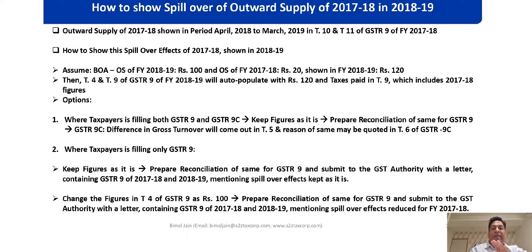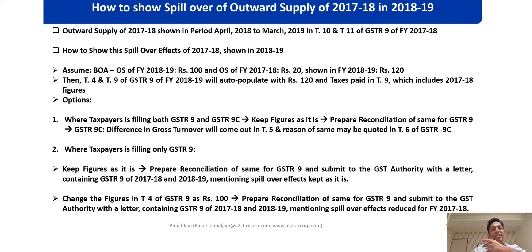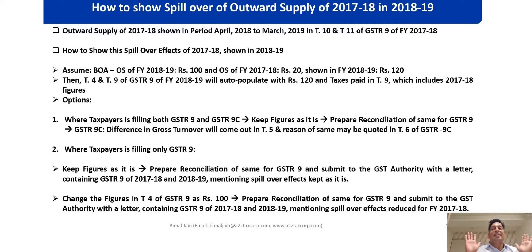That is possible only when your aggregate turnover is more than 5 crore for FY 2018-19. My suggestion would be: do not correct it. Keep the figure as-is — 120 in Table 4 of GSTR 9, which includes 20 rupees of 17-18. When you go to GSTR 9C, your book turnover as per the audited annual financial statement shown in Table 5 of GSTR 9C will show 100 rupees, and your GSTR turnover from GSTR 9 is 120 rupees. The difference of 20 rupees can be narrated in Table 6 — this 20 rupees pertains to 17-18 and is reconciled. Nothing further needs to be stated.